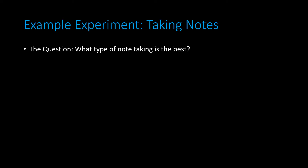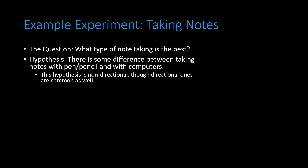Starting with our first example, the question researchers asked is: what type of note-taking is best? They hypothesized that there would be some difference between taking notes with pen and paper versus with computers. Note that this is the difference between a general question and a hypothesis — a hypothesis generally looks at some specific difference or relationship.